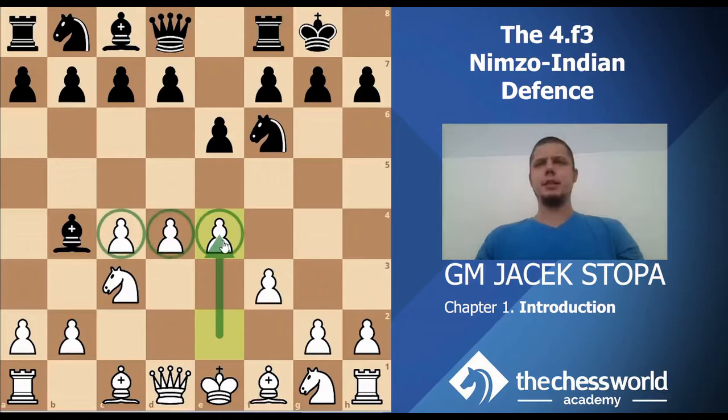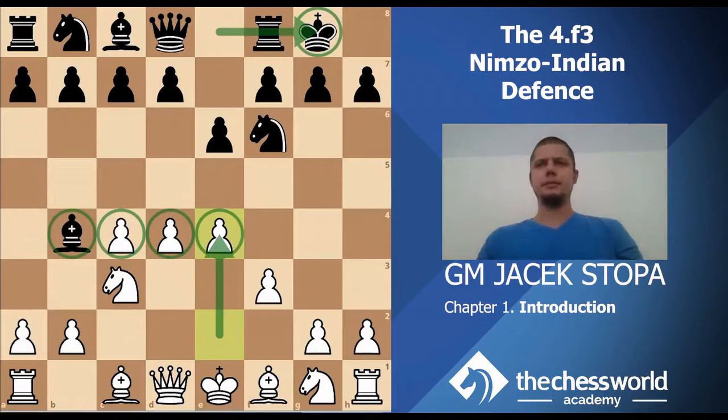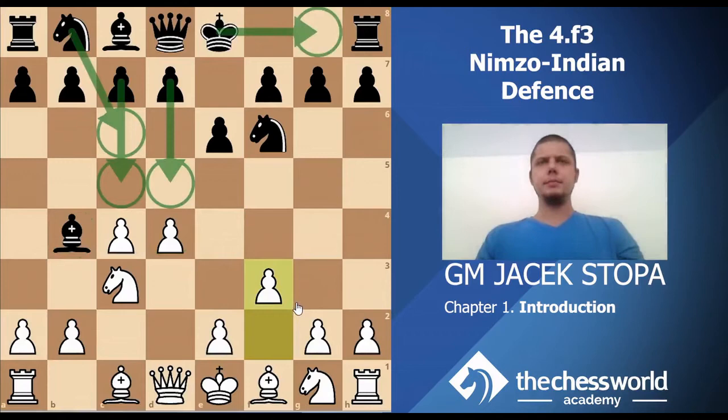If White can sustain this kind of center, it's obviously very good. Of course, Black is not without tricks — Black has already castled and is ahead in development, so Black will have his own play. The e4 push is the main idea. Some weaknesses come with it though — in many scenarios it can be awkward to bring the knight out.